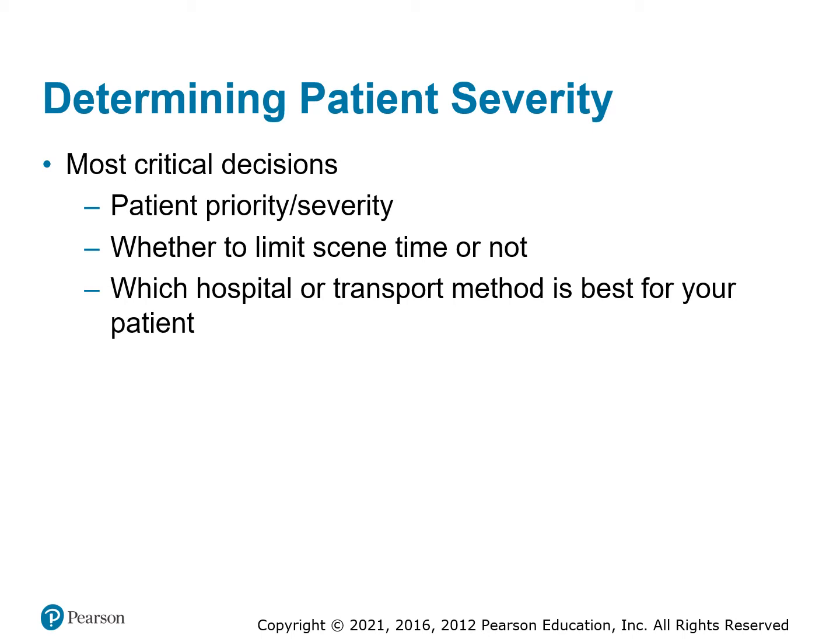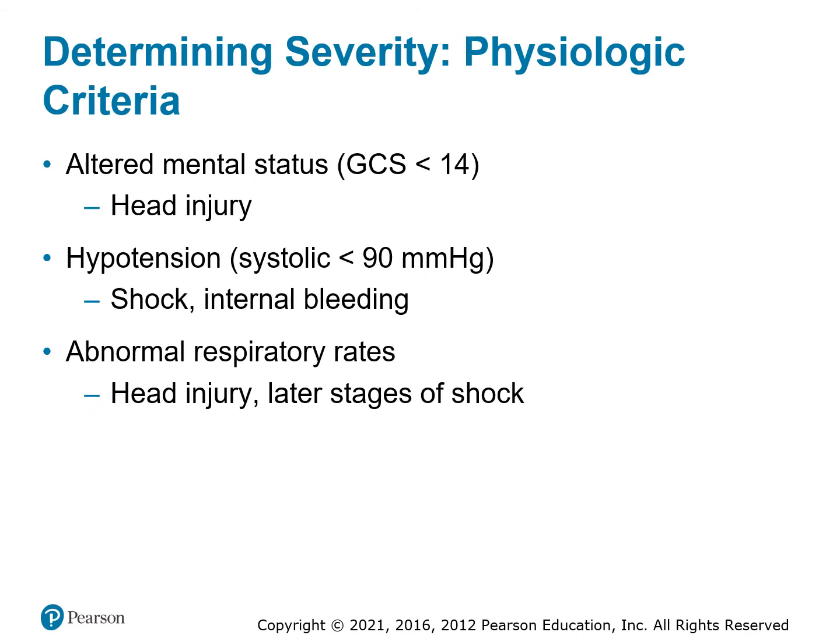We're going to build on what we know from the previous patient scenarios to put them all together and come up with a good solution. First, we're looking for altered mental status — anything less than 14 on the GCS. So they can lose one or two points and be considered a critical patient, which kind of points towards a head injury.